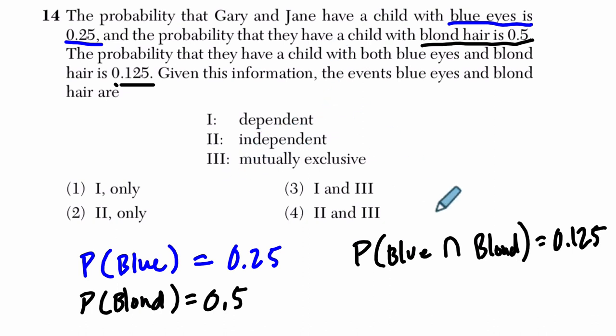Alright, so independent events, the idea is that in general, we could say that for an independent event, the probability of A times the probability of B happening equals the probability of A and B. If they're dependent, that wouldn't be true. If they're mutually exclusive, that's when you have the probability of A and B at the same time equaling 0.